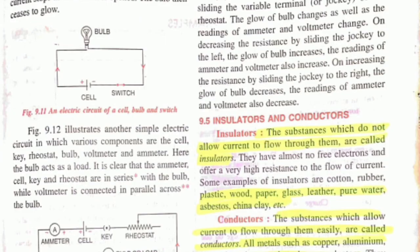Next is insulators and conductors. Insulators do not allow current to flow through them, for example wood, paper, glass. If you don't want current to flow through it, often you use plastic or wood. These are insulators as current doesn't flow through them.